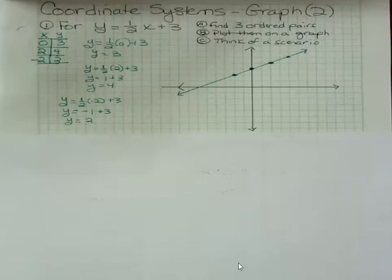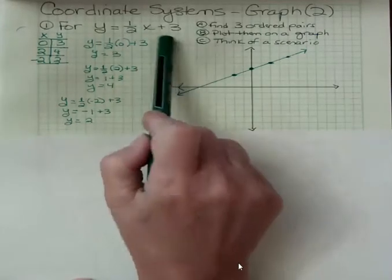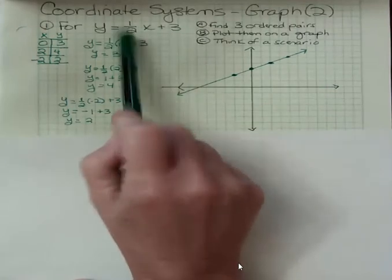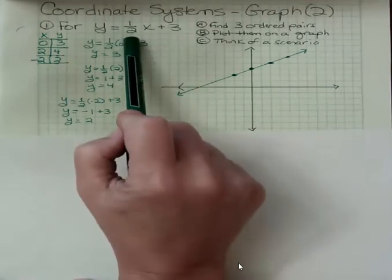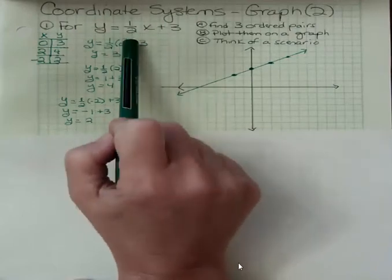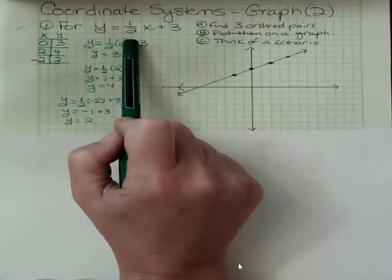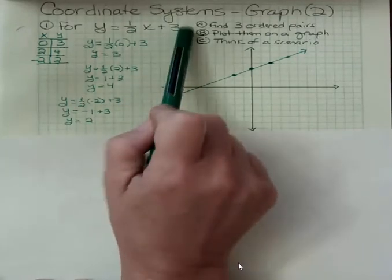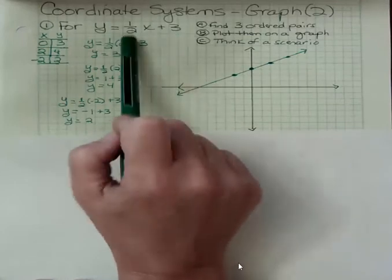The next piece is to think of a scenario. What I'm trying to do is get you to ground in your mind what something like this means. This number at the end is some kind of starting point, and this number is some kind of change that's happening over time or over whatever. Time is the most useful one that we usually talk about. It could be happening over distance or whatever.